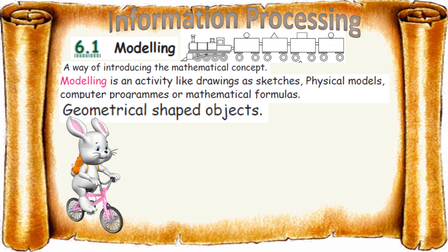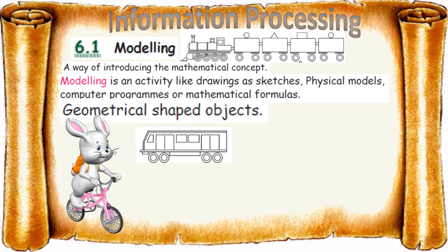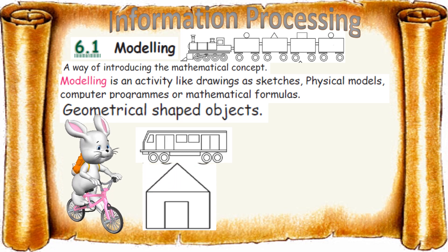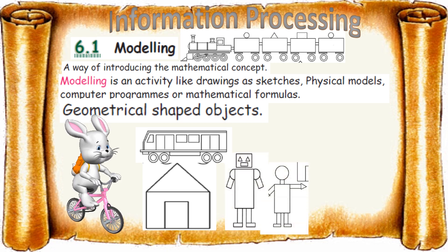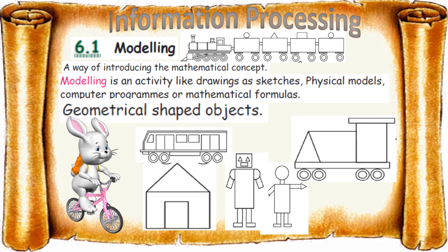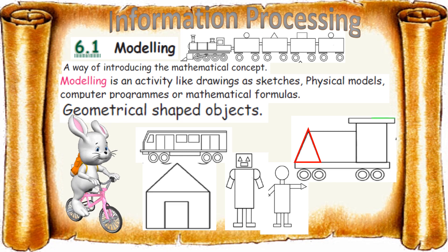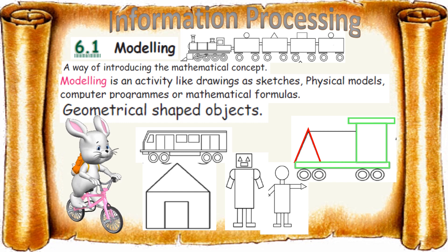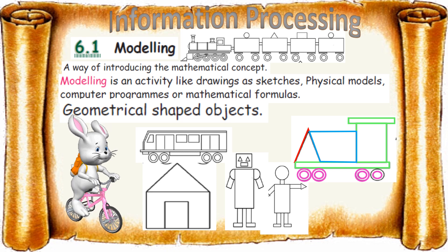Modeling is an activity like drawings, sketches, physical models, computer programs, or mathematical formulas. If you want to model, it's based on geometrical shaped objects. Everything is based on our shapes, whether it's a robot or a human. Let's see the shapes: triangle, rectangles, trapezium, circle. Everything is based on shapes.